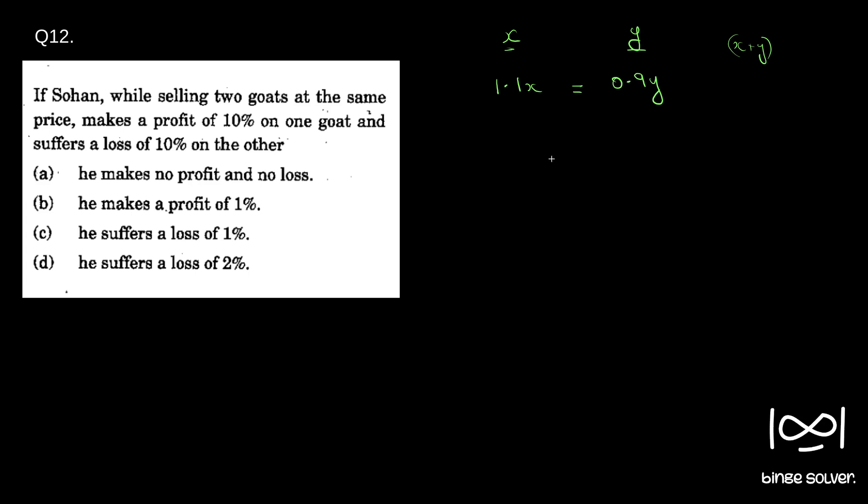So one trick is in such cases we can assume the original selling price as a random number that is divisible by both 11 and 9. So 11 into 9, say 990.